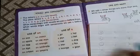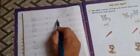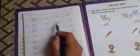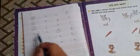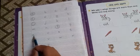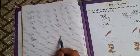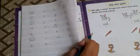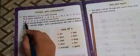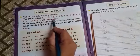The other letters B, C, D, F, G, H, J, K, L, M, N, P, Q, R, S, T, V, W, X, Y, Z are consonants. The other letters are consonants.